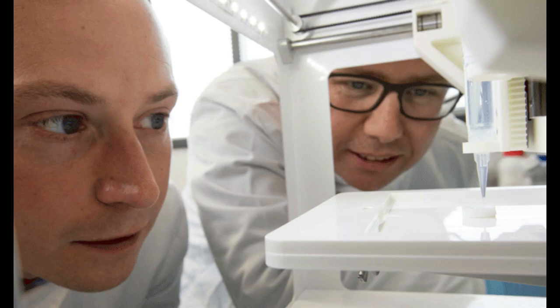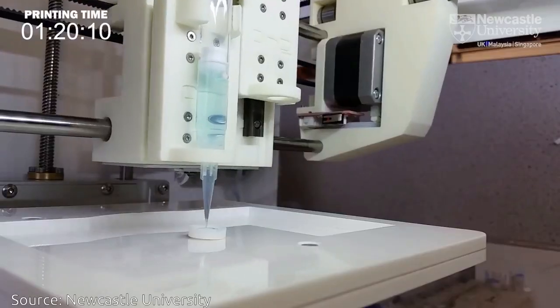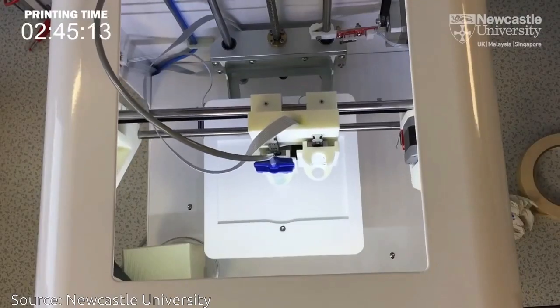Scientists at Newcastle University have 3D printed the world's first human corneas. By creating a special bio-ink using stem cells mixed together with alginate and collagen, they were able to print the cornea using a simple low-cost 3D bioprinter.